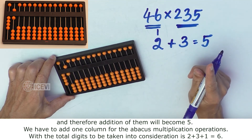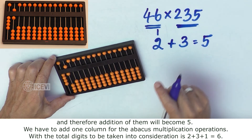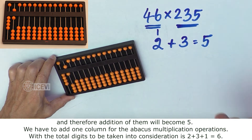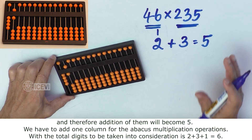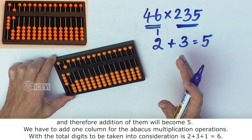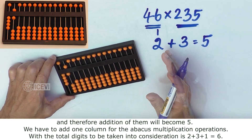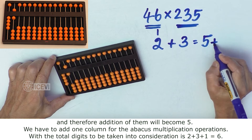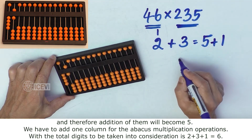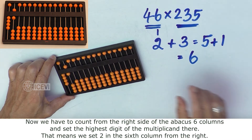We have to add one column for the Abacus multiplication operations. This one additional column is required for every multiplication. So with this total, you get a total of 6 columns.